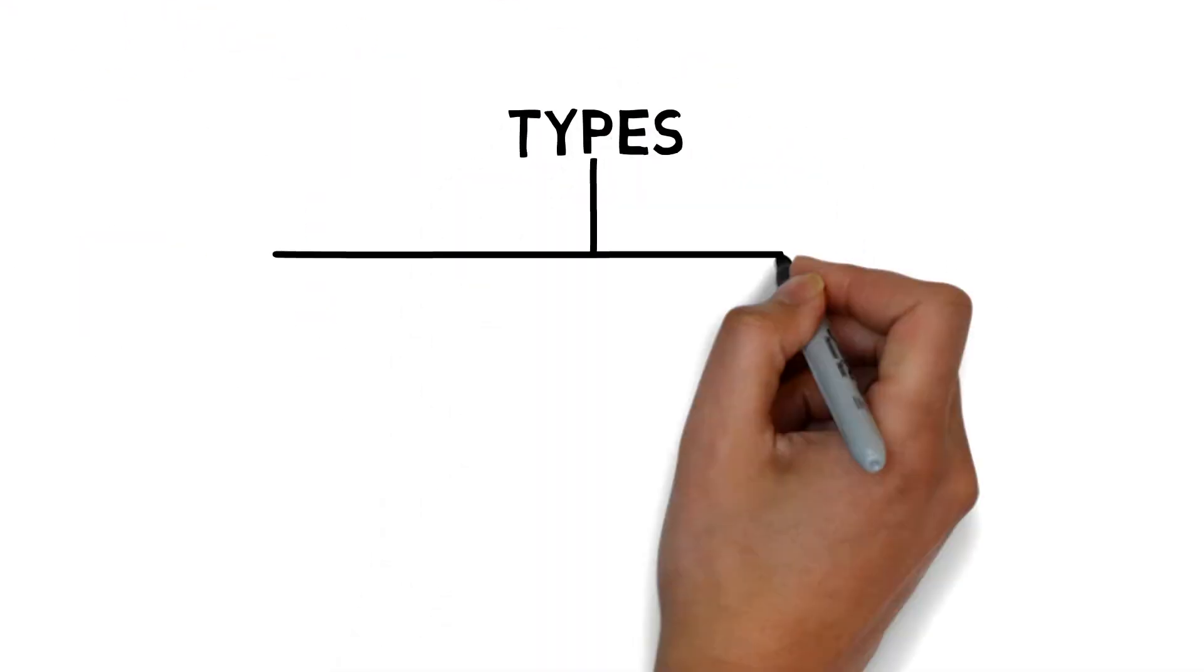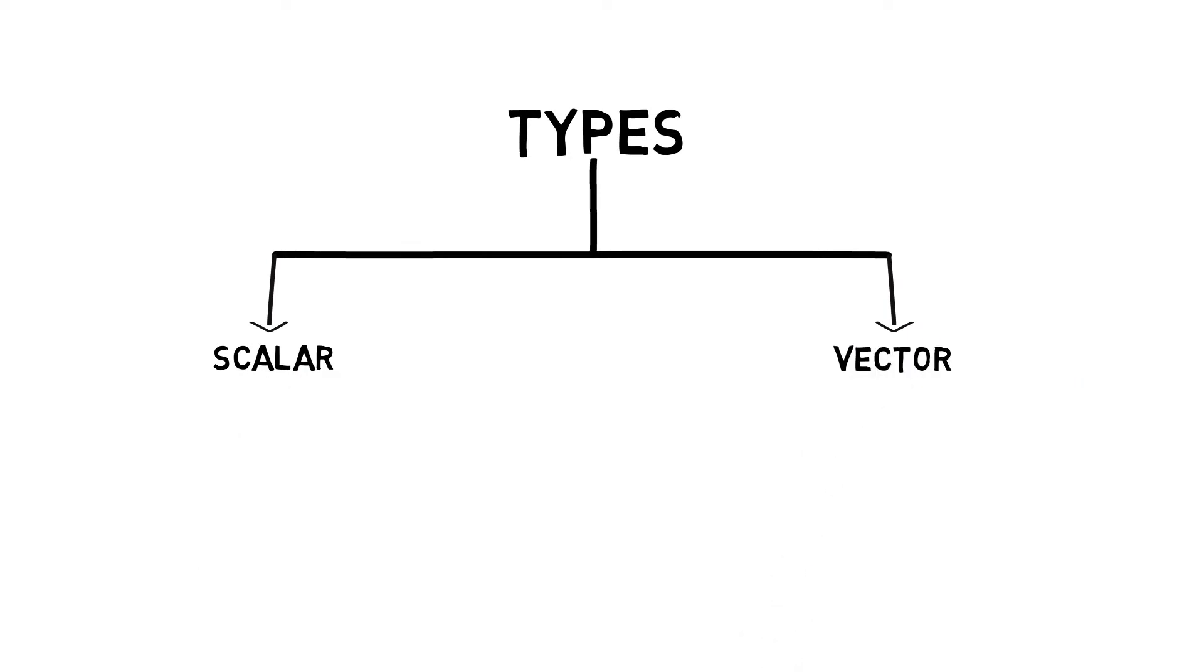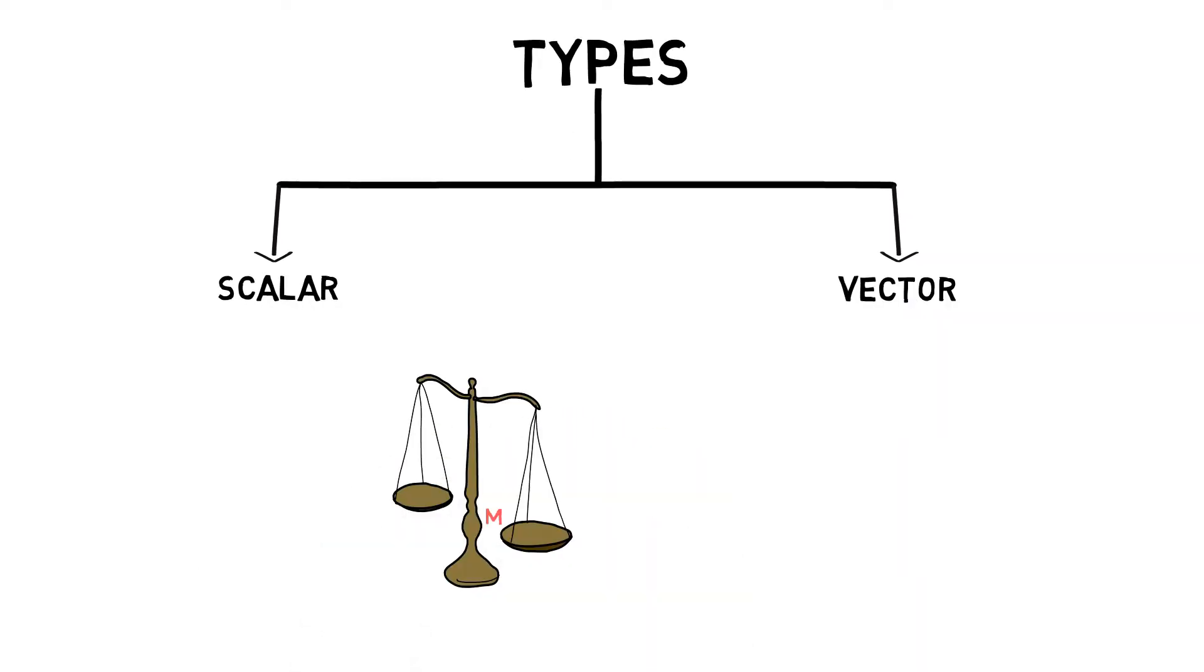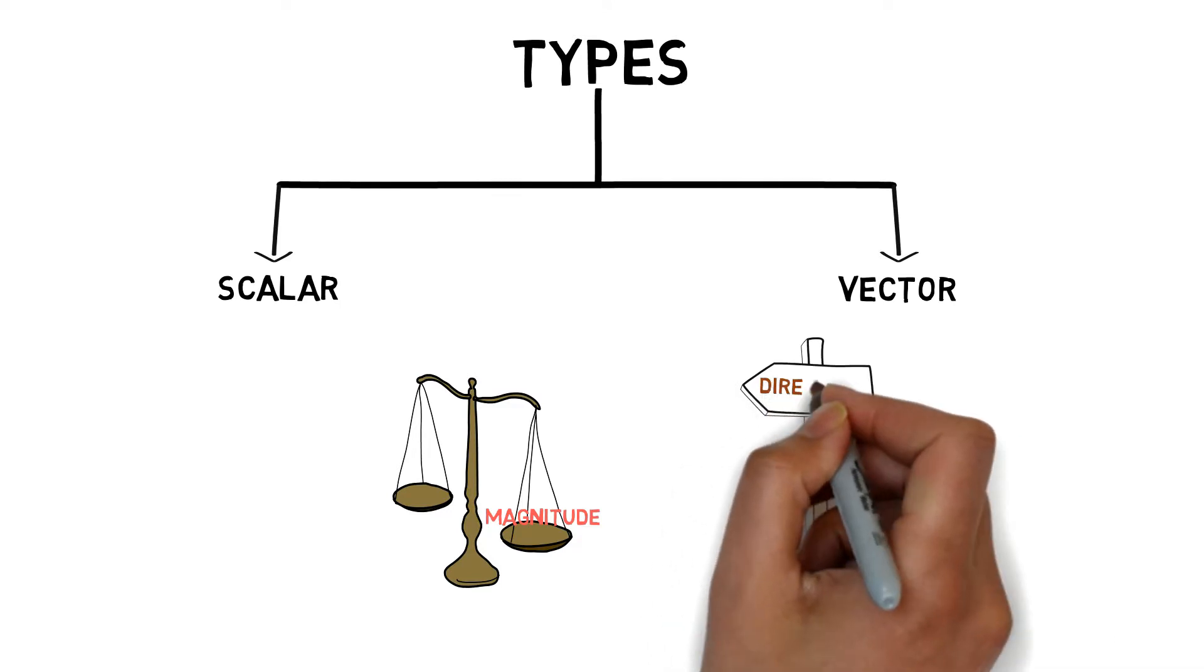Before coming to the classification to understand the two types, scalar and vector quantities, you need to understand the two important terms: magnitude and direction.